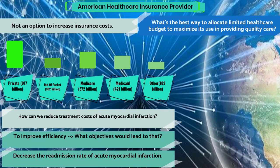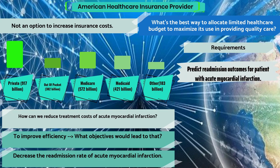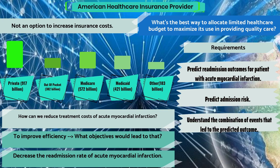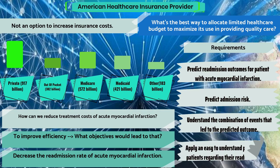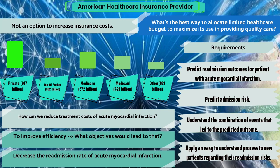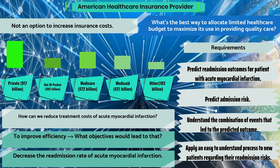You would then outline business requirements for the model to be built. For example: (1) predict readmission outcomes for patients with acute myocardial infarction; (2) predict readmission risk; (3) understand the combination of events that led to the predicted outcome; and (4) apply an easy-to-understand process to new patients regarding their readmission risk. This helps hospital staff explain the new model so that patients actually understand their risks based on the work done. That completes step one: business understanding.